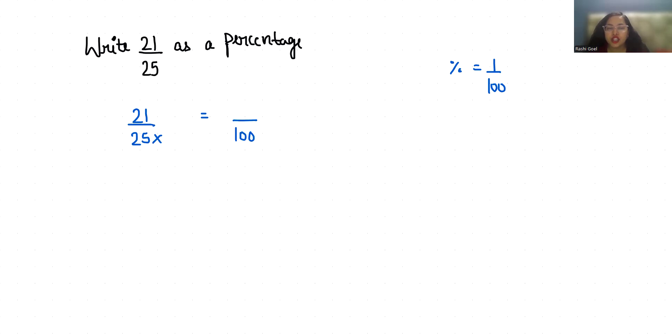If you make any change in denominator, you have to make the similar change in numerator. So numerator becomes 21 times 4, which equals 84 by 100.